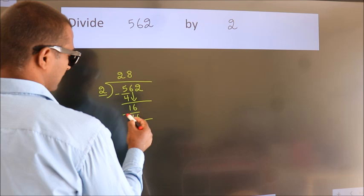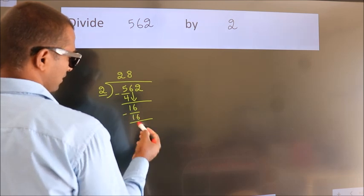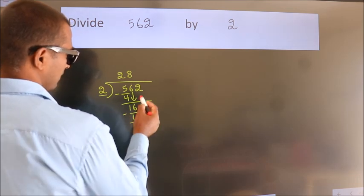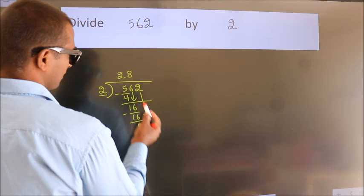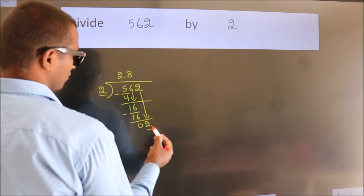Now, we subtract. We get 0. After this, bring down the beside number. So, 2 down. So, 2.